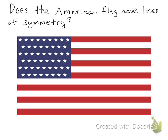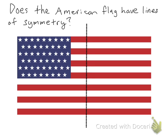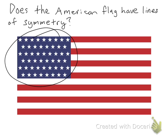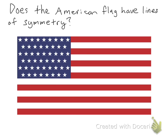So does the American flag have lines of symmetry? No, it doesn't, because there's no way I can fold this flag so that the top and the bottom look exactly the same. It's because we have these stars here, and the stars make it so that the top half cannot look like the bottom half.